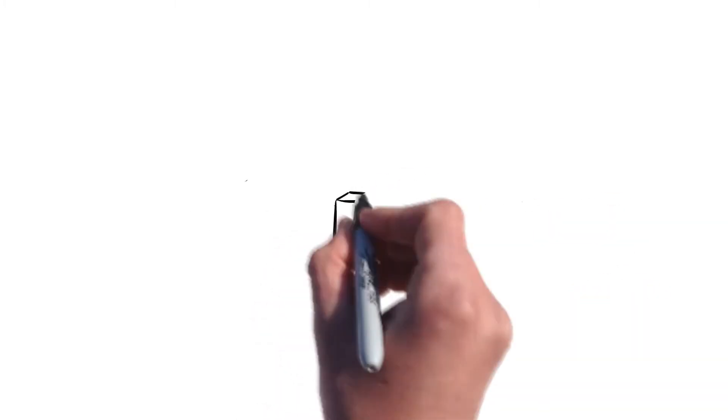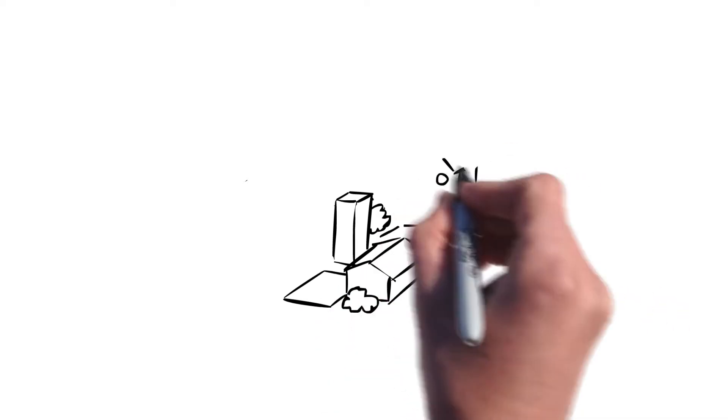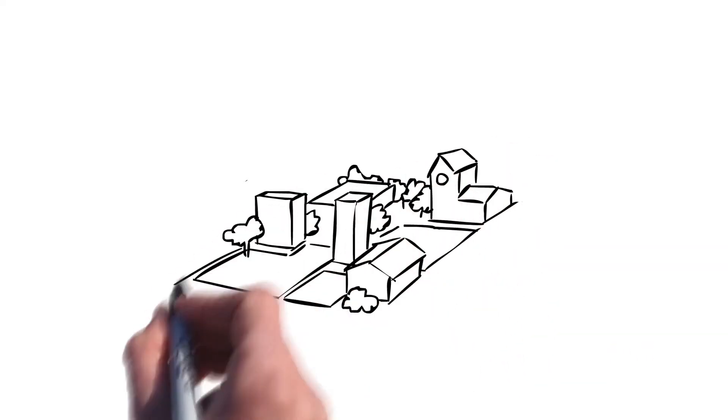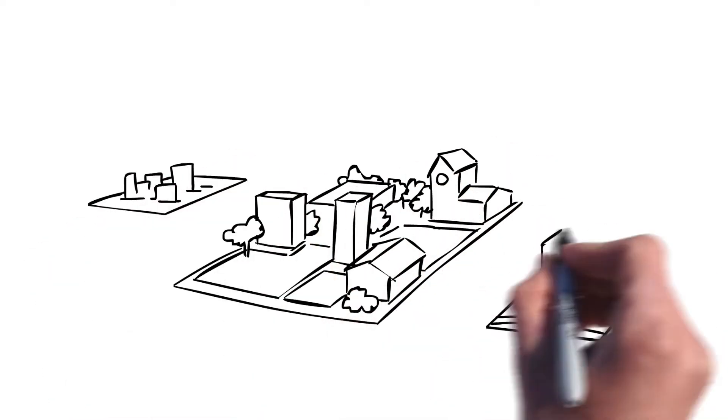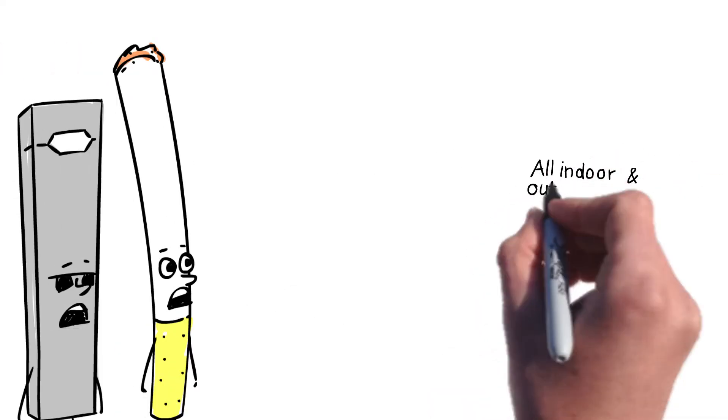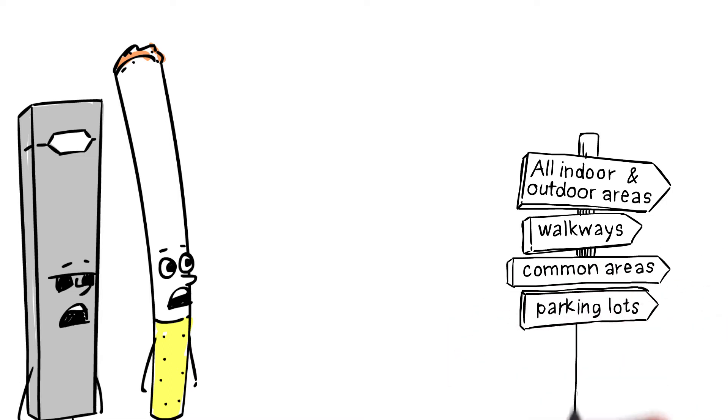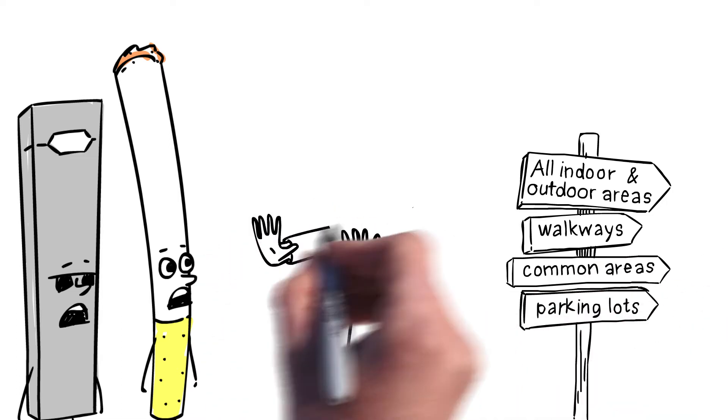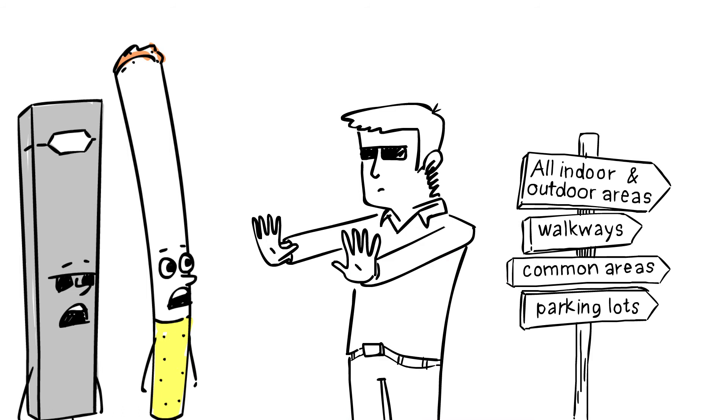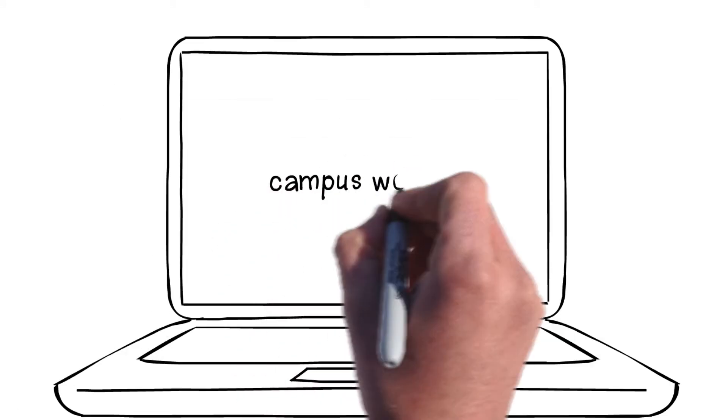A 100% smoke and tobacco free campus includes all areas of the main campus, satellite campuses, labs, and medical centers. This includes all indoor and outdoor areas, walkways, outdoor common areas, and parking lots - basically anywhere within the campus borders. To find a map of your campus's borders, visit your campus's website.